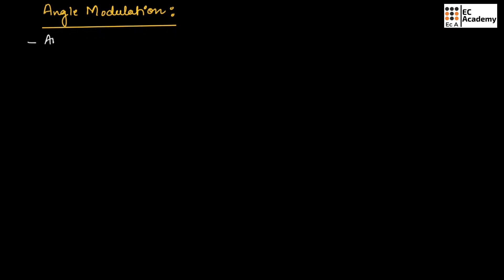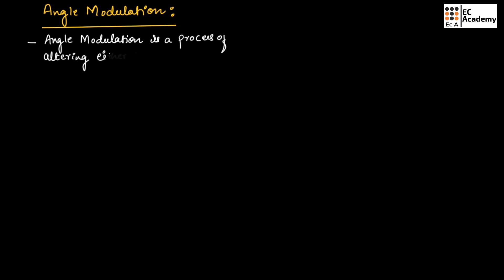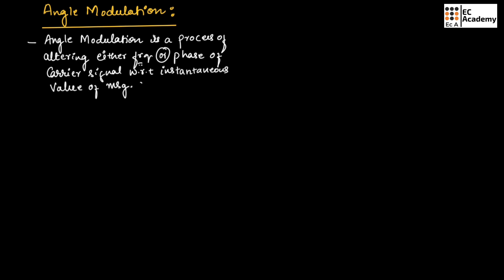Angle modulation is a process of altering either the frequency or phase of the carrier signal with respect to the instantaneous value of the message signal, by keeping the amplitude of the carrier constant.